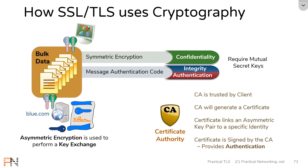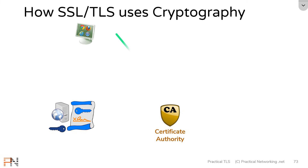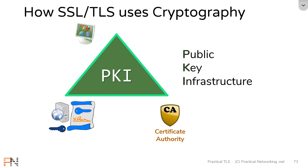Notice that all three key players — the client, the server, and the certificate authority — were crucial in making this work. These three key players actually form a triangle known as the PKI, or the public key infrastructure. We'll be picking apart what the public key infrastructure is in the next lesson.